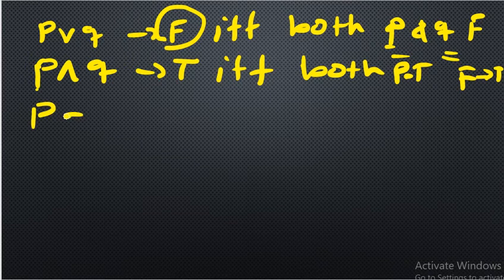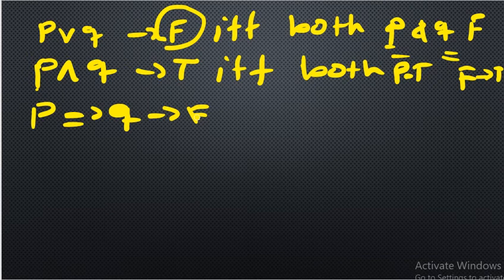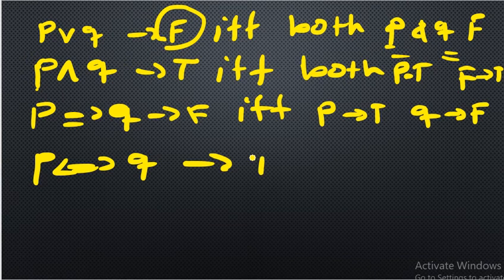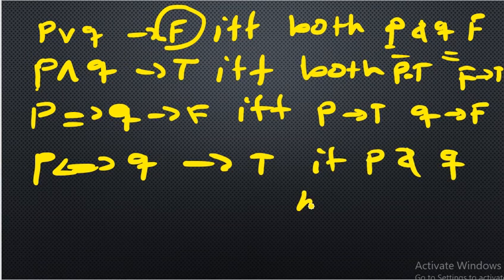In case of p implies q, it will be false if and only if the premise p is true and the conclusion q is false — otherwise it's always true. In case of biconditional, p biconditional q will be true if p and q have the same truth values.